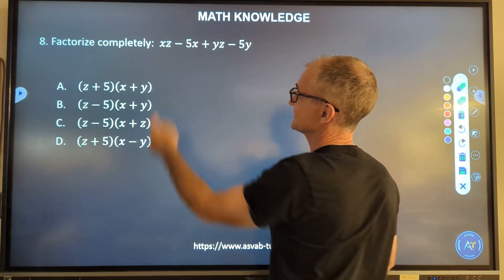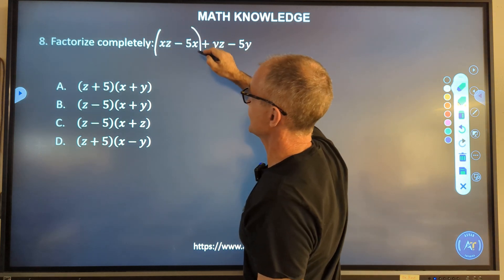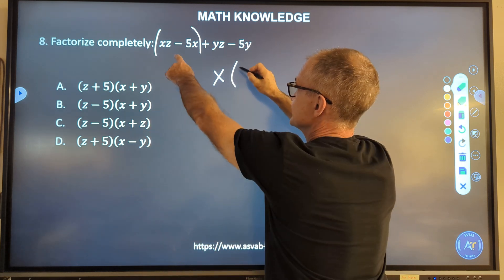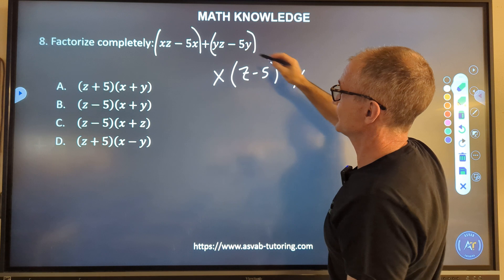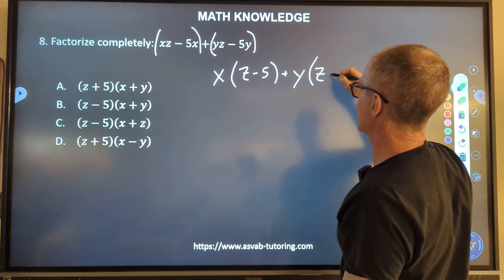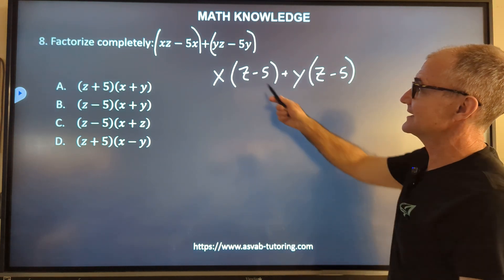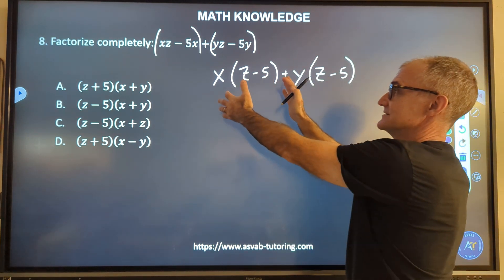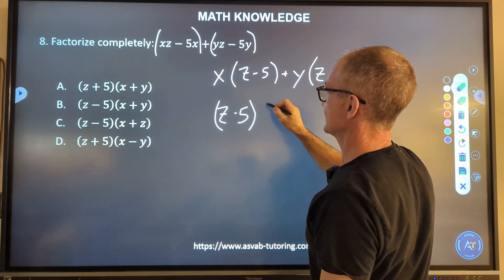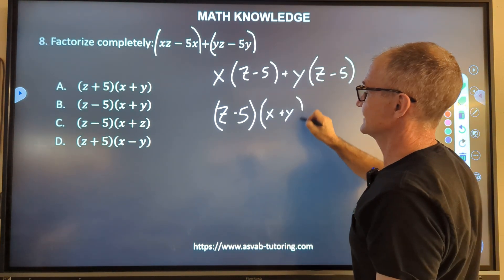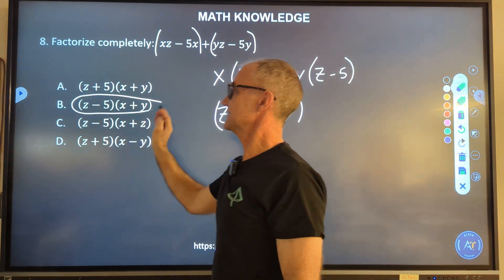Number 8, factorize completely. Factorizing is the opposite of expanding. I see in this first set of terms there's a common term of x. So I'm going to pull that x out, leaving me with z minus 5. Here, I have a common term of y. I'm going to pull that y out, leaving me with z minus 5. So I've pulled out common terms. Now I see z minus 5 is common to this term and this term. So I'm going to pull that z minus 5 out front. I pull it out of this thing, I'm left with an x. I pull it out of this thing, I'm left with a y. And that's my answer, z minus 5 times x plus y. Answer B.